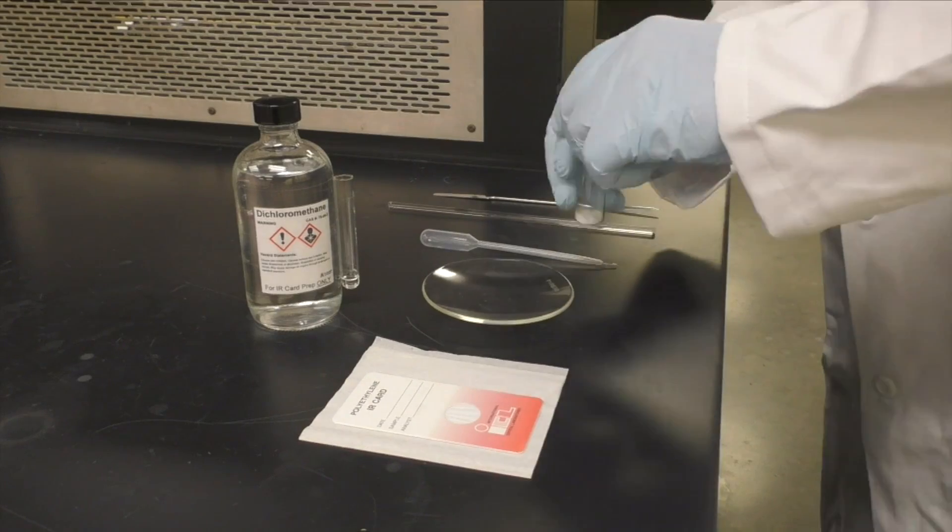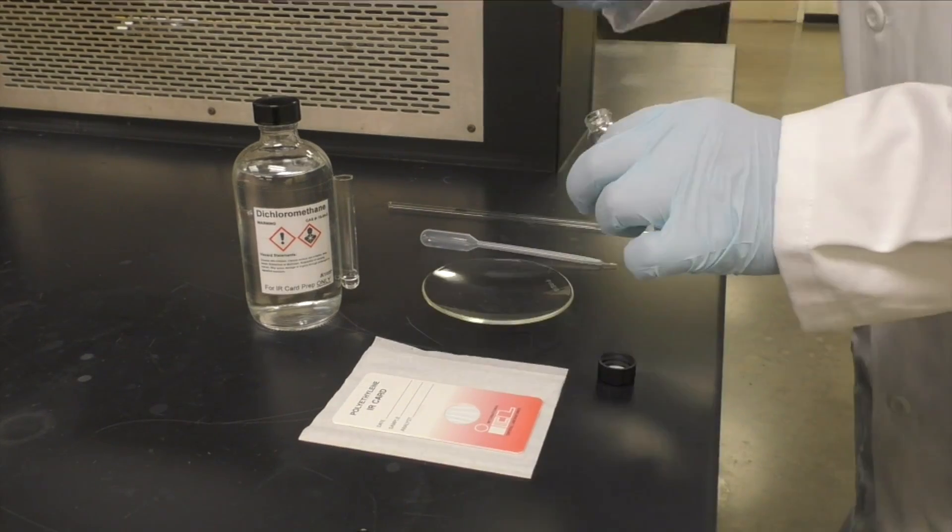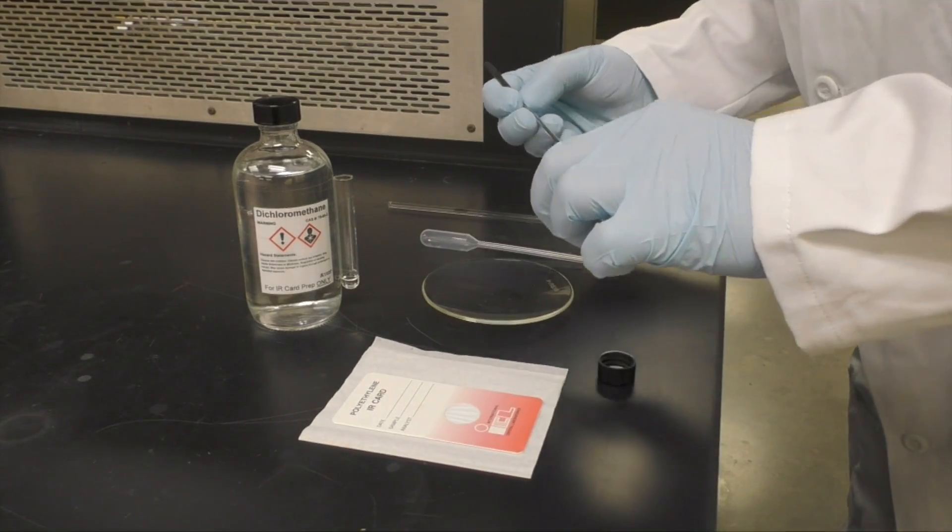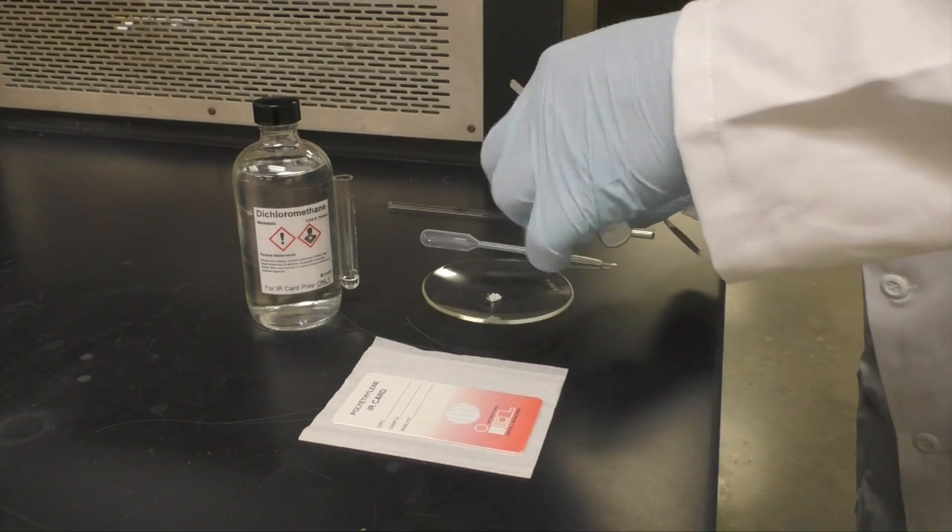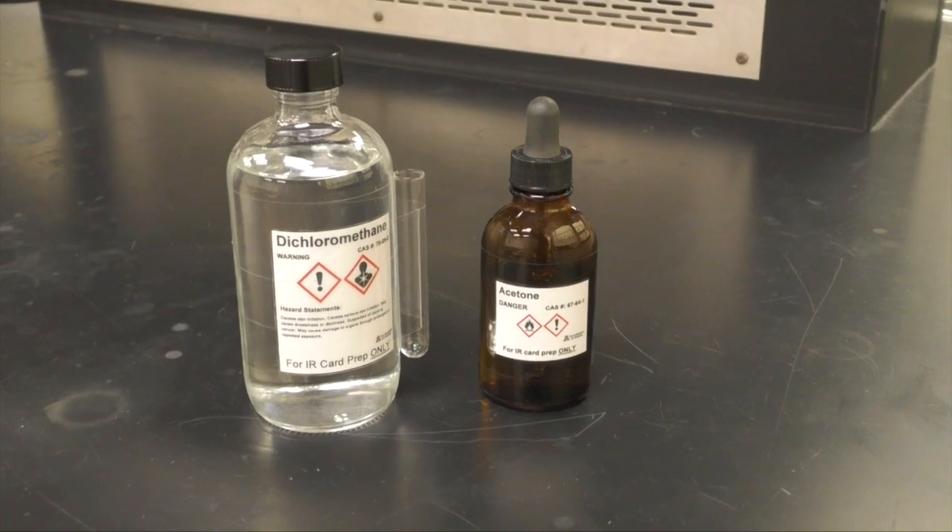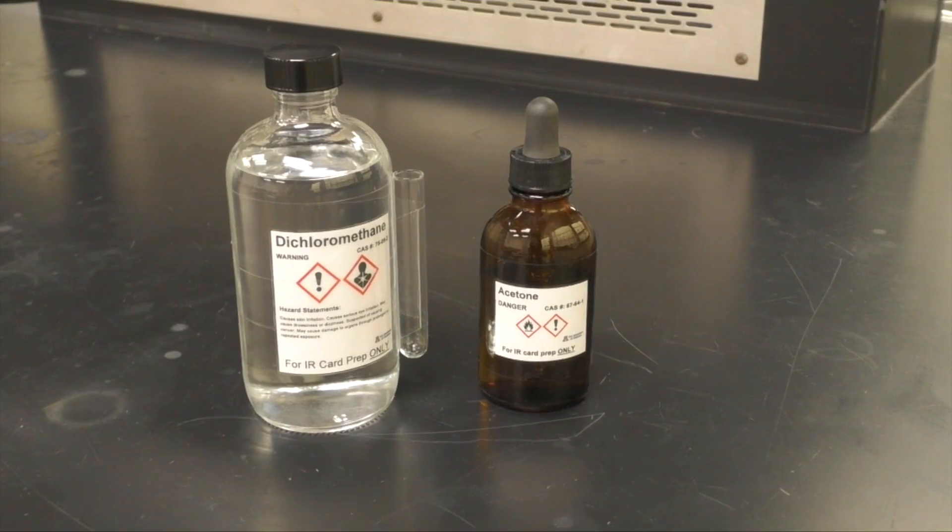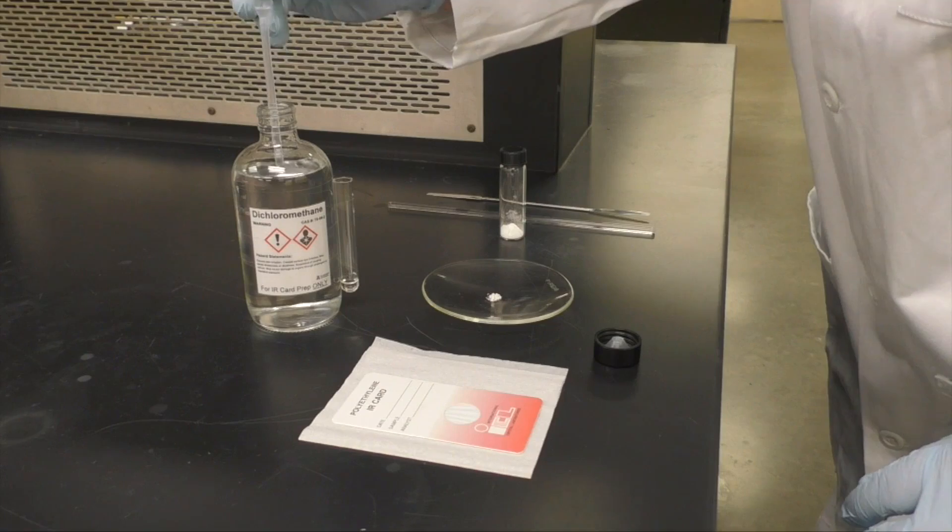To prepare a solid sample, first add a small spatula tip full of solid to a watch glass. Depending on the solubility of your sample, you will choose either acetone or dichloromethane. Add some solvent to the watch glass.